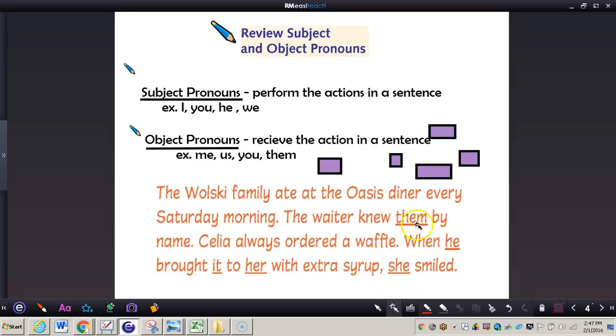So we can see the waiter knew them. That's an example of an object pronoun because that's receiving the action. Next one.